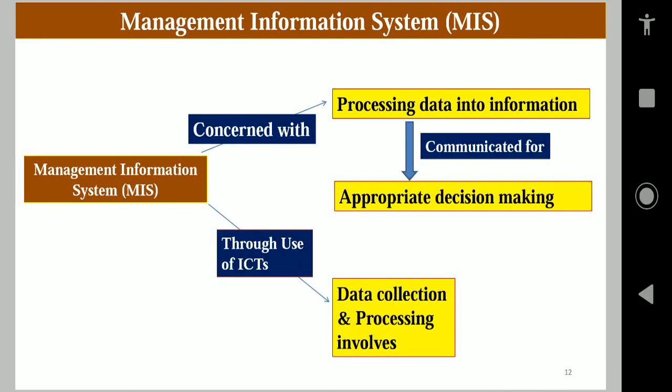What is a management information system? Management information system is concerned with processing data into information, which is communicated for appropriate decision making. If data is meaningful, then only it becomes information, and that information is used for appropriate decision making. Through the use of ICTs, management information systems collect and process data by involving computers, internet, and email tools.